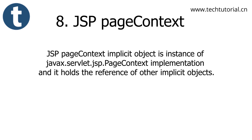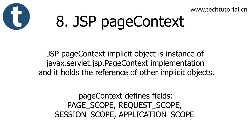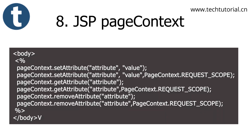The JSP pageContext implicit object is an instance of javax.servlet.jsp.PageContext implementation, and it holds references to the other implicit objects. Its fields include page scope, request scope, session scope, and application scope. With the pageContext object, we can store and remove attributes from any of the four scopes. For example: pageContext.setAttribute(attributeName, value), pageContext.setAttribute(attributeName, value, PageContext.REQUEST_SCOPE), and pageContext.getAttribute(attribute, scope).